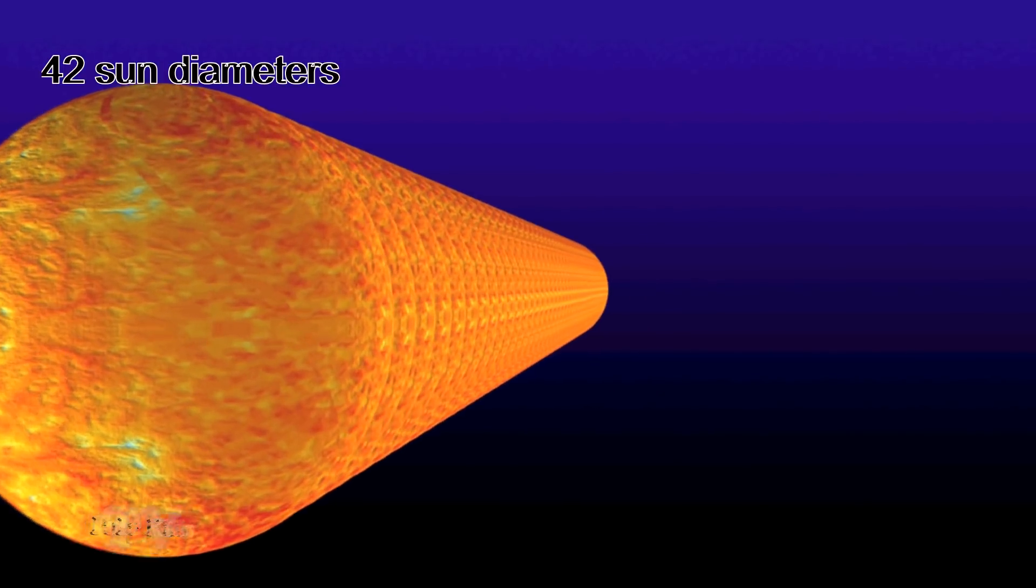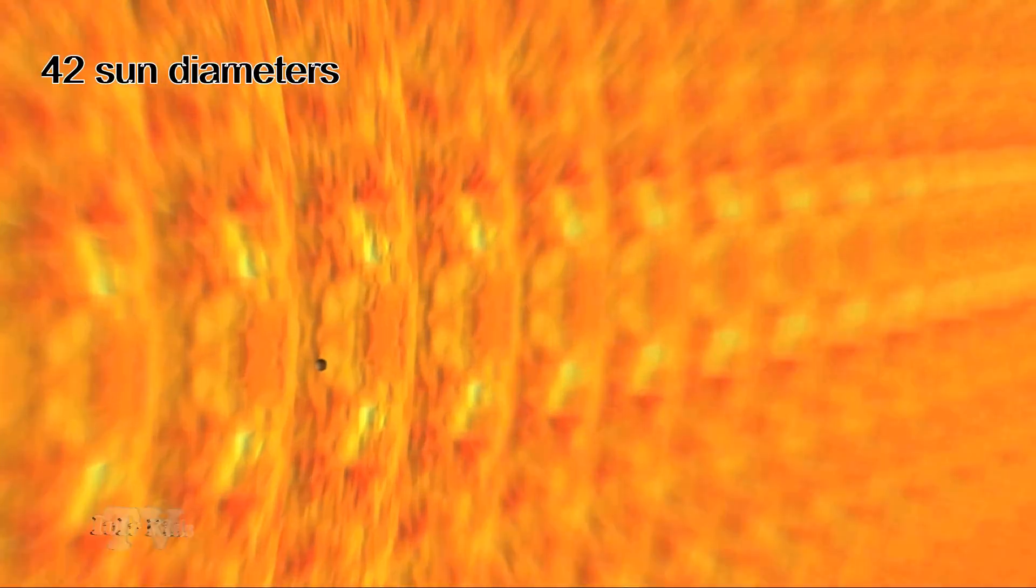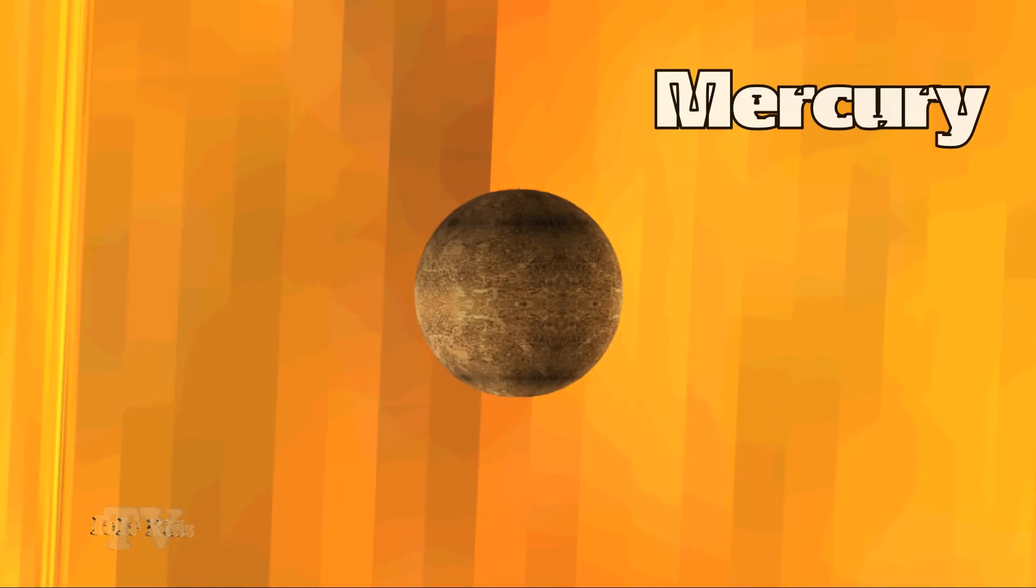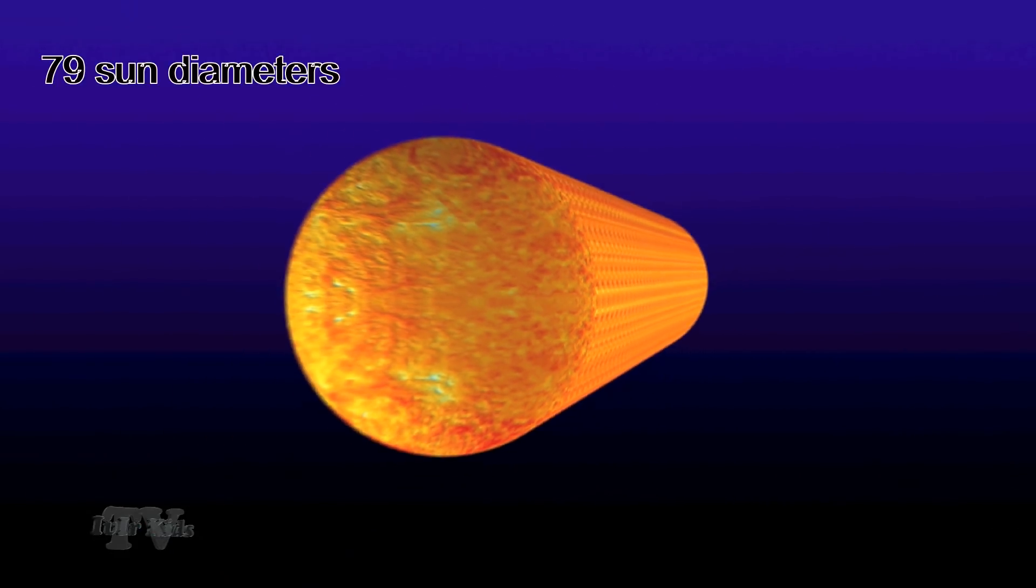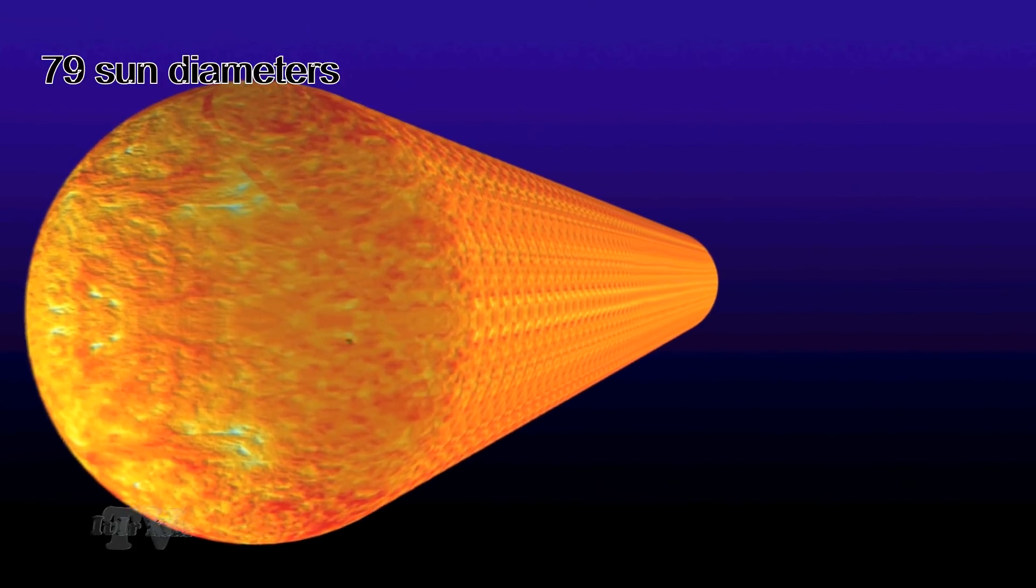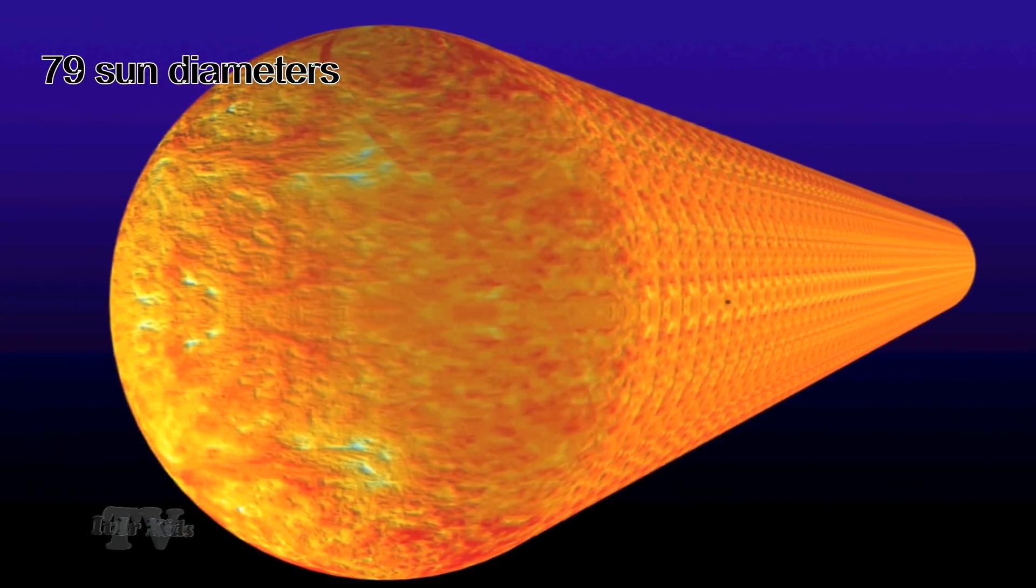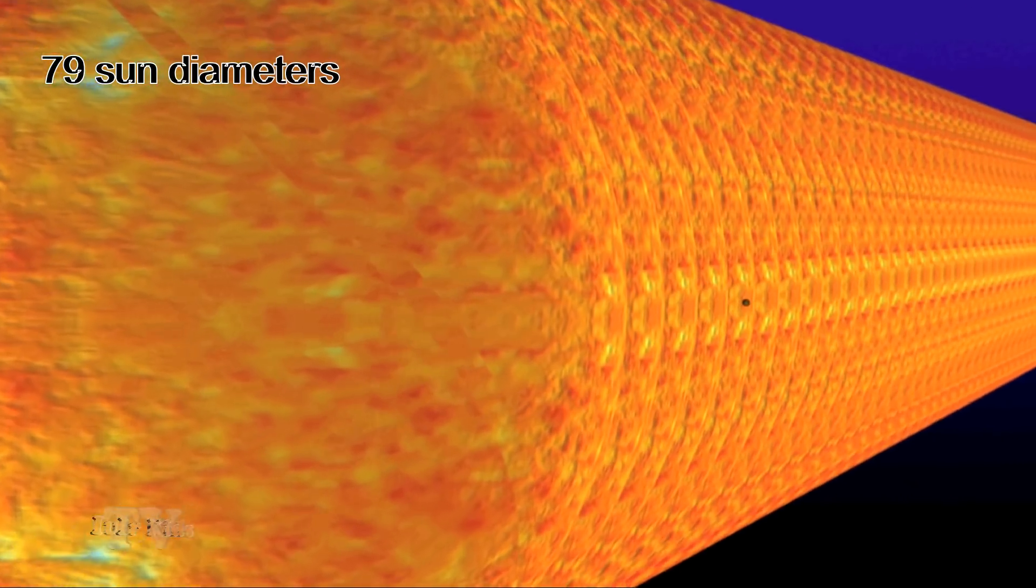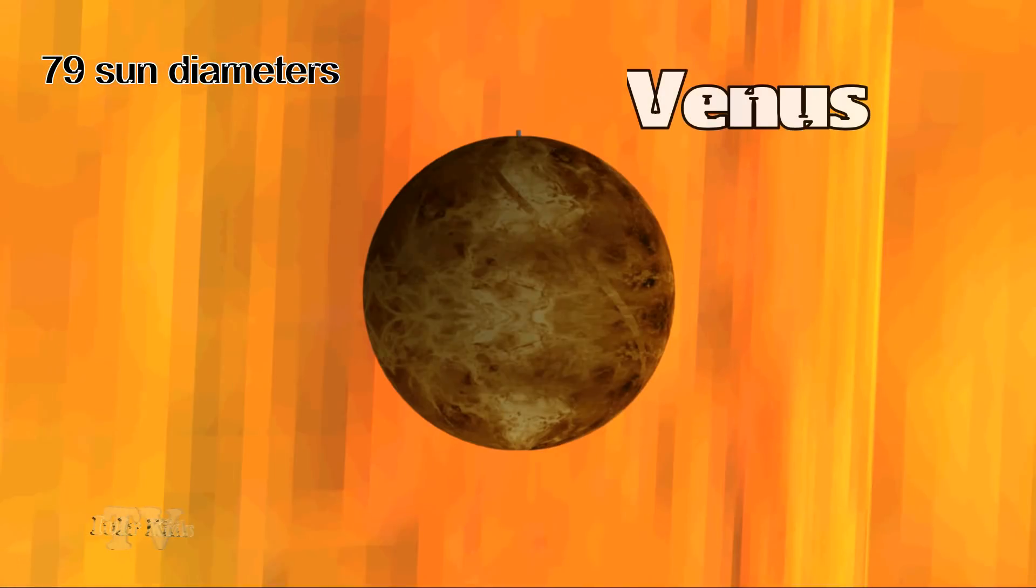The distance from the Sun to Mercury is 42 diameters of the Sun. The distance from the Sun to Venus is 79 diameters of the Sun.